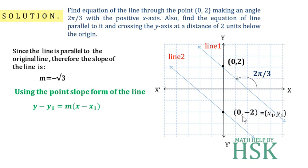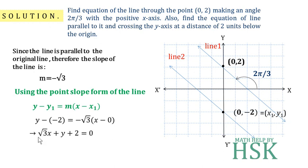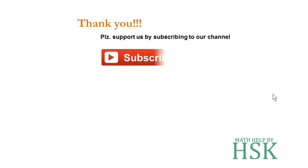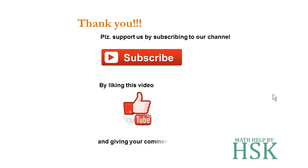Substituting the values, we get y − (−2) = −√3(x − 0), which gives us √3x + y + 2 = 0. This is the required equation of Line 2. Thank you — please support us by subscribing to our channel, liking this video, and leaving a comment.